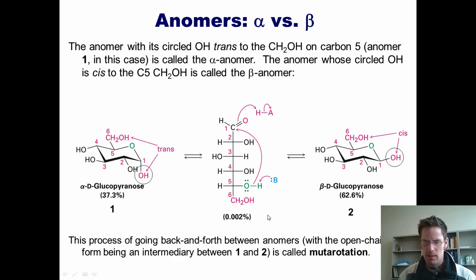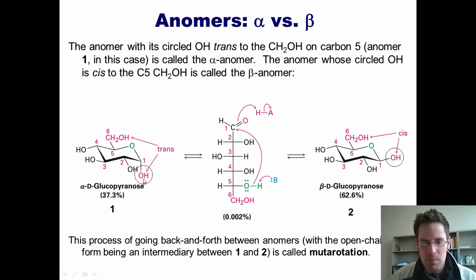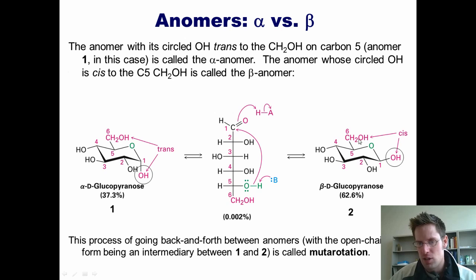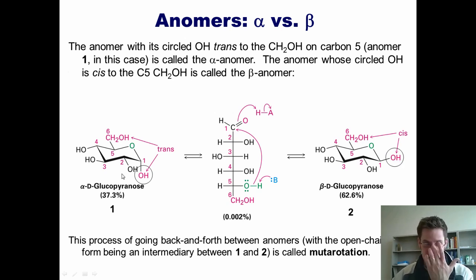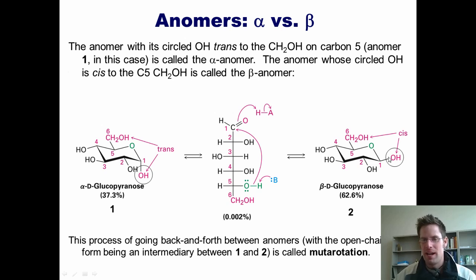This brings up an important point — the principle of alpha versus beta sugars. Looking at anomer 1, the anomeric OH is pointing down, and the CH2OH dangling off of carbon 5 in the ring is pointing up. These two groups are trans to each other in this anomer. In anomer 2, the CH2OH is pointing up and the OH is pointing up also — these two groups are cis. If you have an anomer where the anomeric OH is trans to the CH2OH in the pyranose form, it is called an alpha anomer. If the CH2OH and the OH are cis to each other, they are called beta anomers.